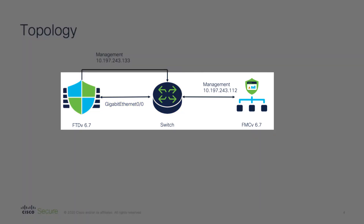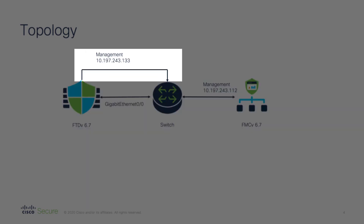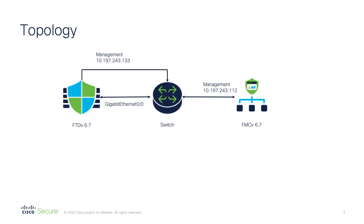First, I will use Gig0/0 to onboard a new device to use data interface for FMC registration via CLI. Then, I will switch from data interface to management interface via FMC GUI. Lastly, for those users who are upgrading from an earlier release to 6.7, I will cover moving from management interface to data interface via GUI.